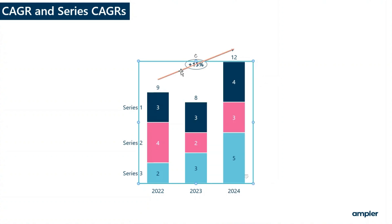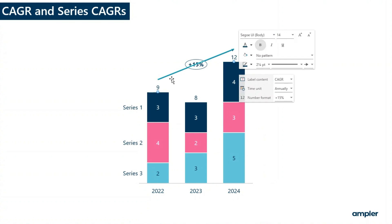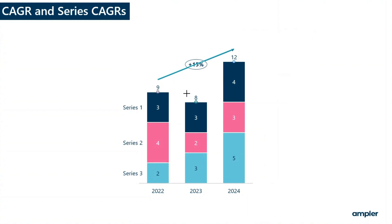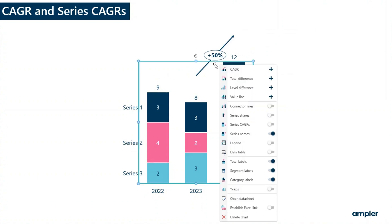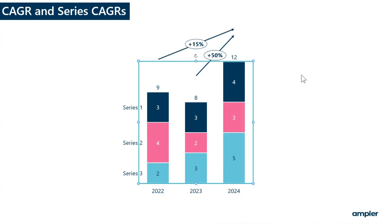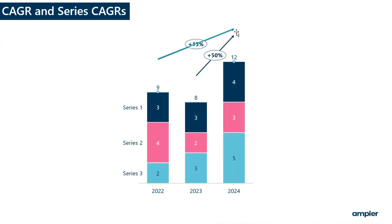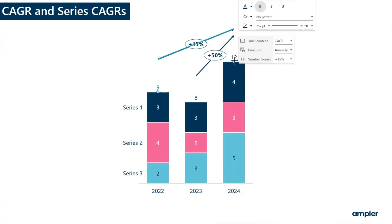To change the start and end, select the kegger and drag the handles to the desired categories. You can add multiple keggers simply by selecting more from the context menu.